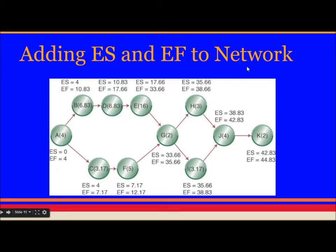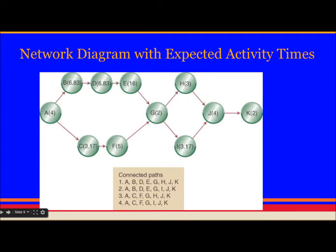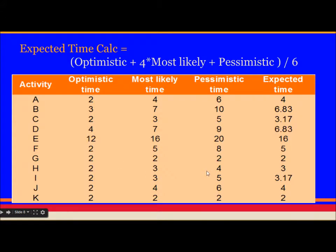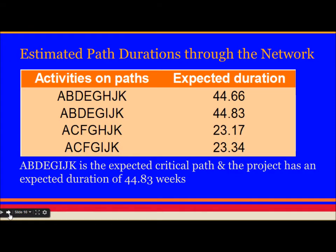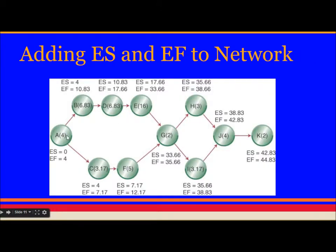Adding early start and early finish to the network. If you don't know how to do early start and early finish to the network, I will again ask you to go back to my video which explains critical path method. There I have explained how to do that. You can use these values calculated here to make this diagram with ES and EF in the network. It is very easy to do. You just need to add the early start and duration to come up with the early finish.